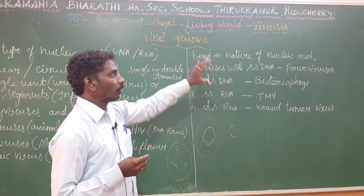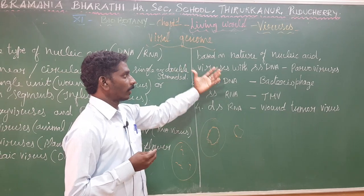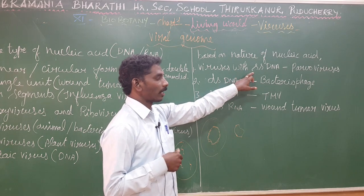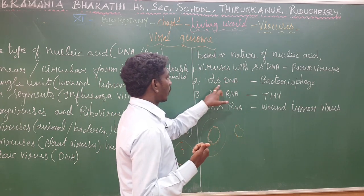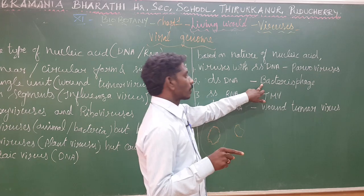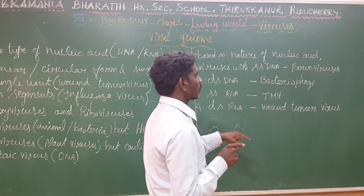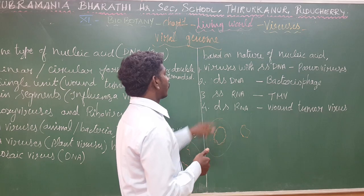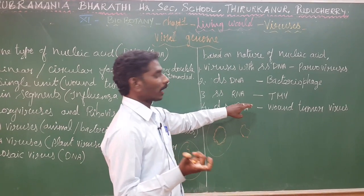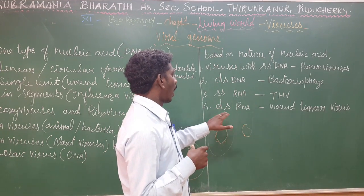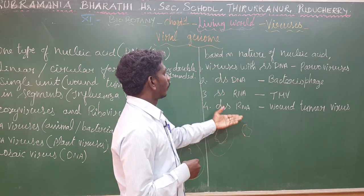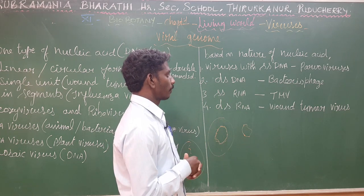Based on the nature of the nucleic acid structure, viruses are classified into four types: viruses with single-stranded DNA (example: Parvovirus), double-stranded DNA (example: bacteriophage), single-stranded RNA (example: tobacco mosaic virus), and double-stranded RNA (example: wound tumor virus).